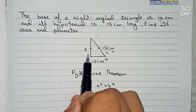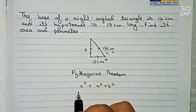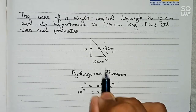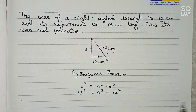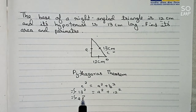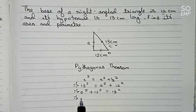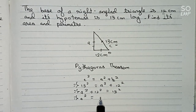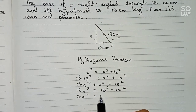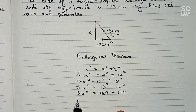So the hypotenuse squared equals a² + b². Putting in the values: 13² = a² + b². Rearranging: a² + 12² = 13², which gives a² = 13² − 12². That is a² = 169 − 144.